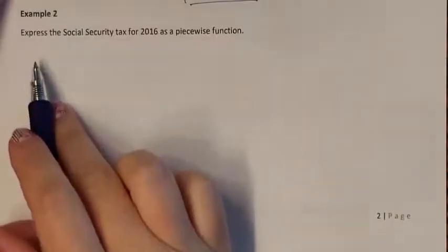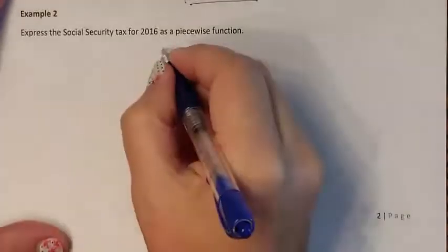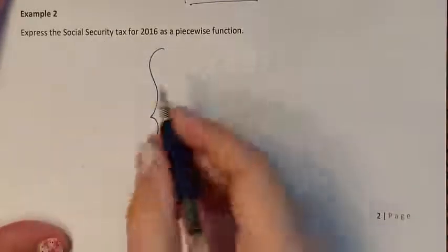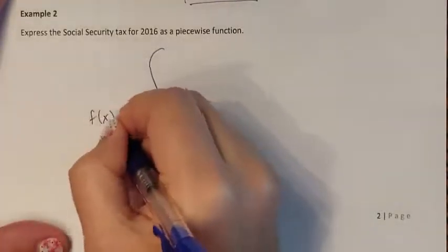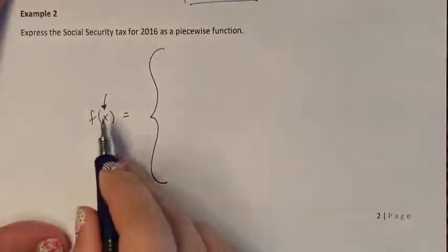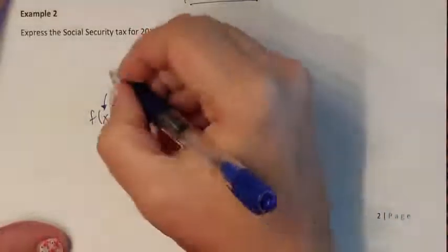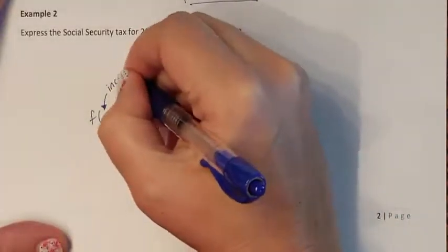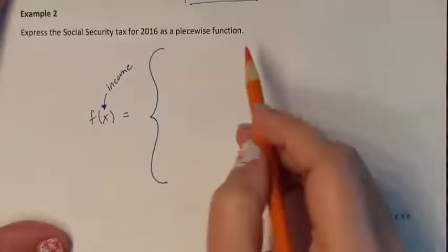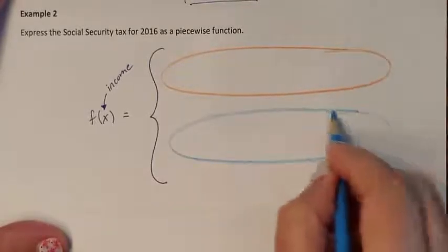Example 2: Express the Social Security tax for 2016 as a piecewise function. We will write F(x) where X represents income, since Social Security looks at your income to determine your tax. There are two levels, so we need to figure out the charge for each level.